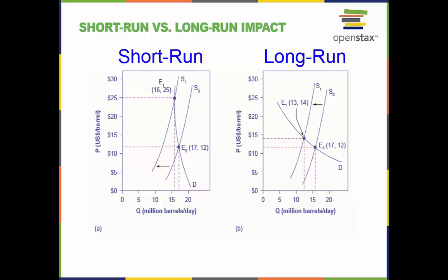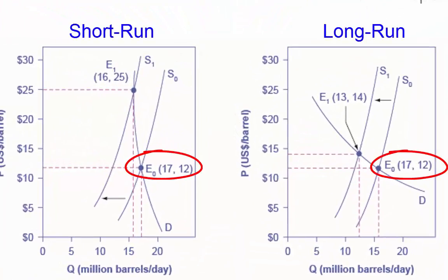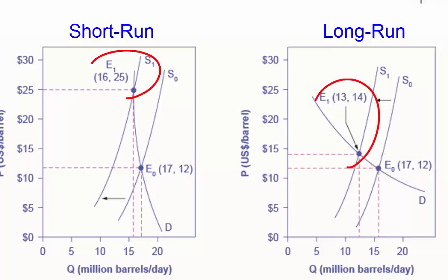These graphs provide us with a visual example for this. The intersection E0, between demand curve D and supply curve S0, is the same in both graphs. The shift of supply to the left from S0 to S1 is identical in both graphs. The new equilibrium, E1, has a higher price and a lower quantity than the original equilibrium, E0, in both graphs.